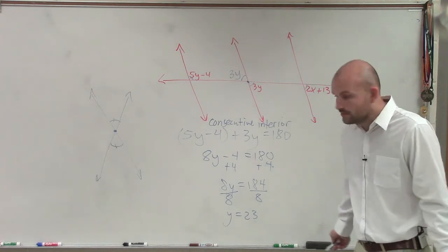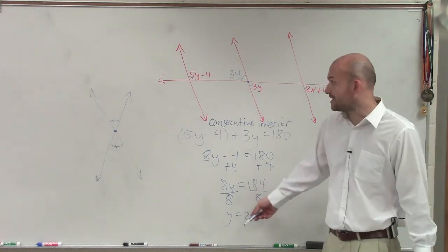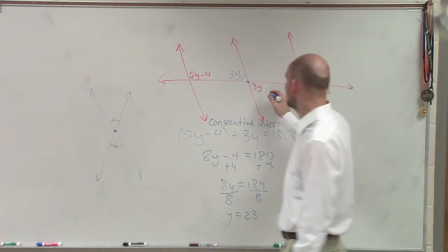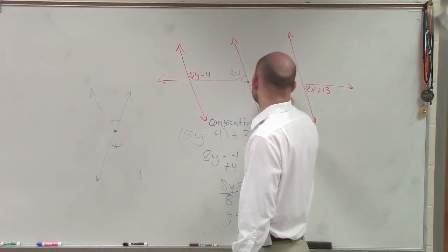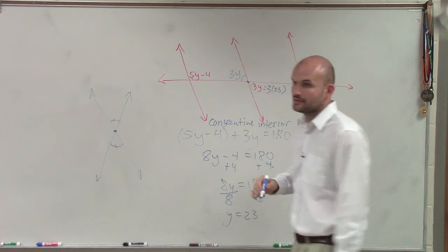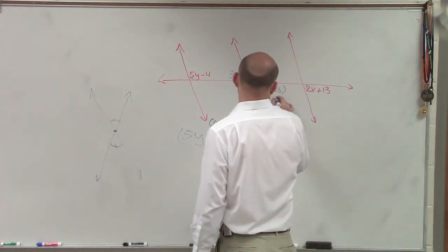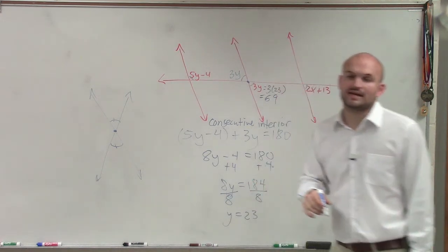So now we know what y is, right? So ladies and gentlemen, we can now plug in what y is right here. So we could say that's 3 times 23. And 3 times 23 is going to become 69. So now you have the answer of 69.